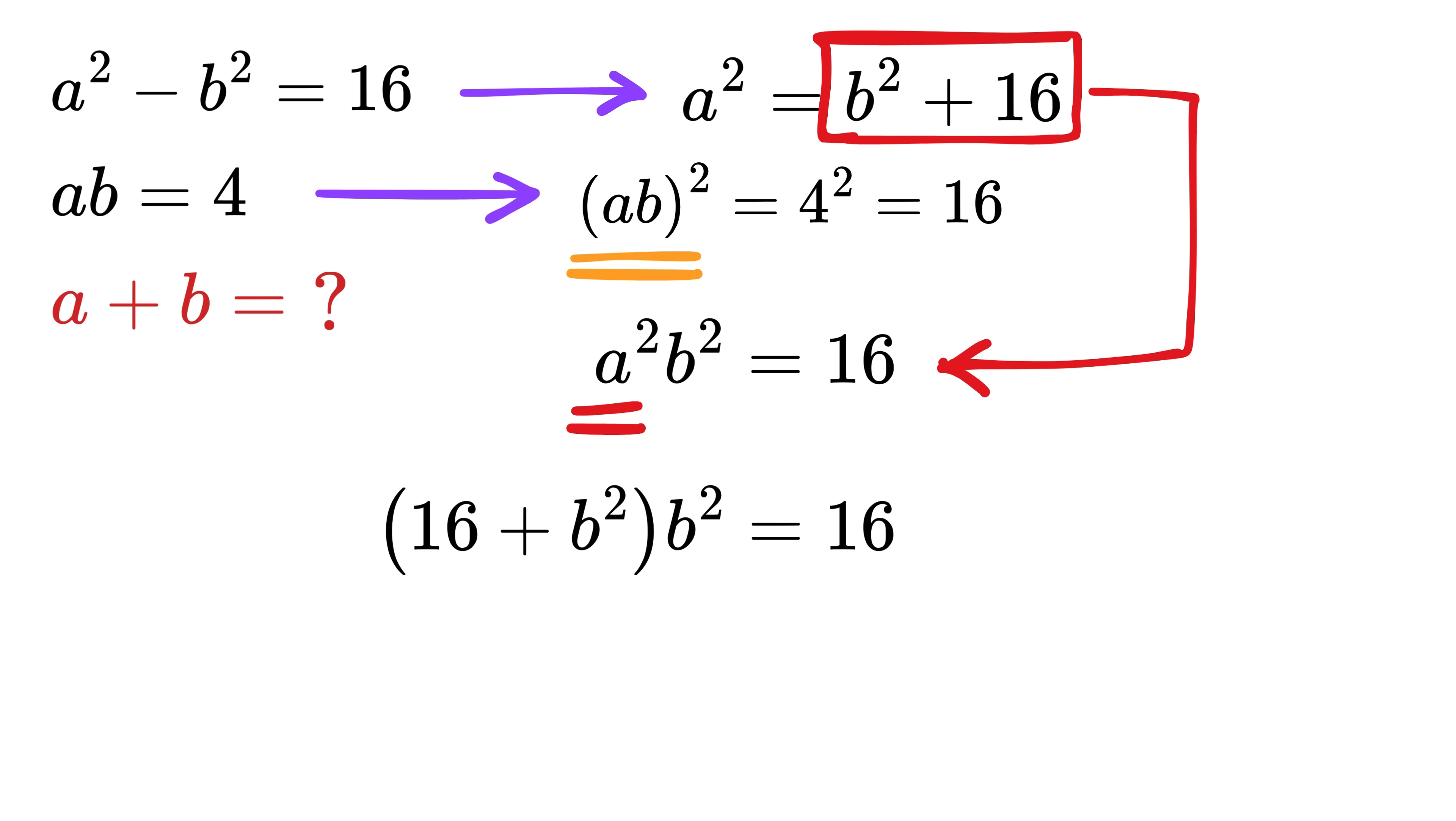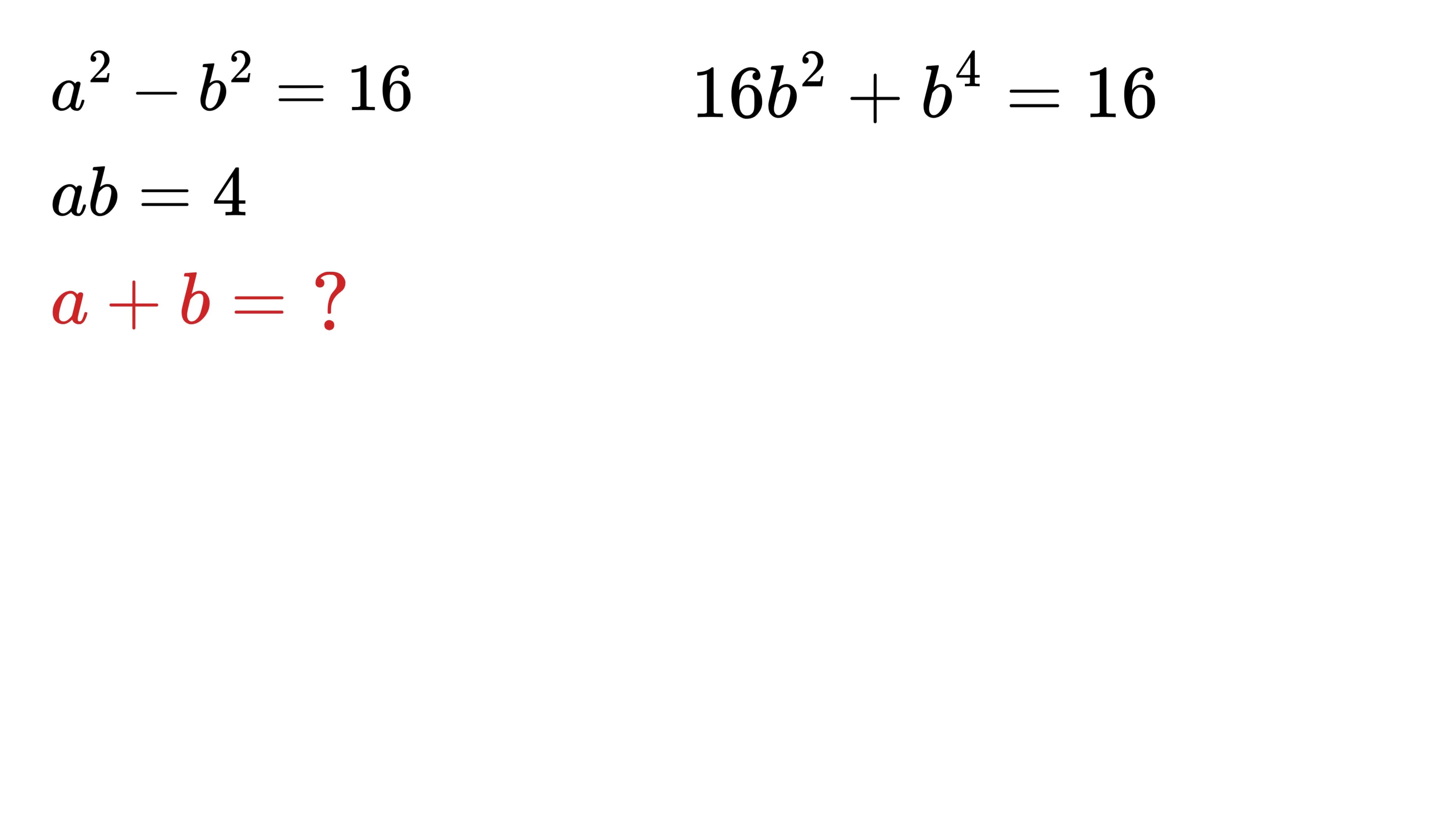On expanding, we get 16B squared plus B raised to 4 equals 16. Now it's easy to solve for B because this is a quadratic equation in terms of B squared. After solving this,